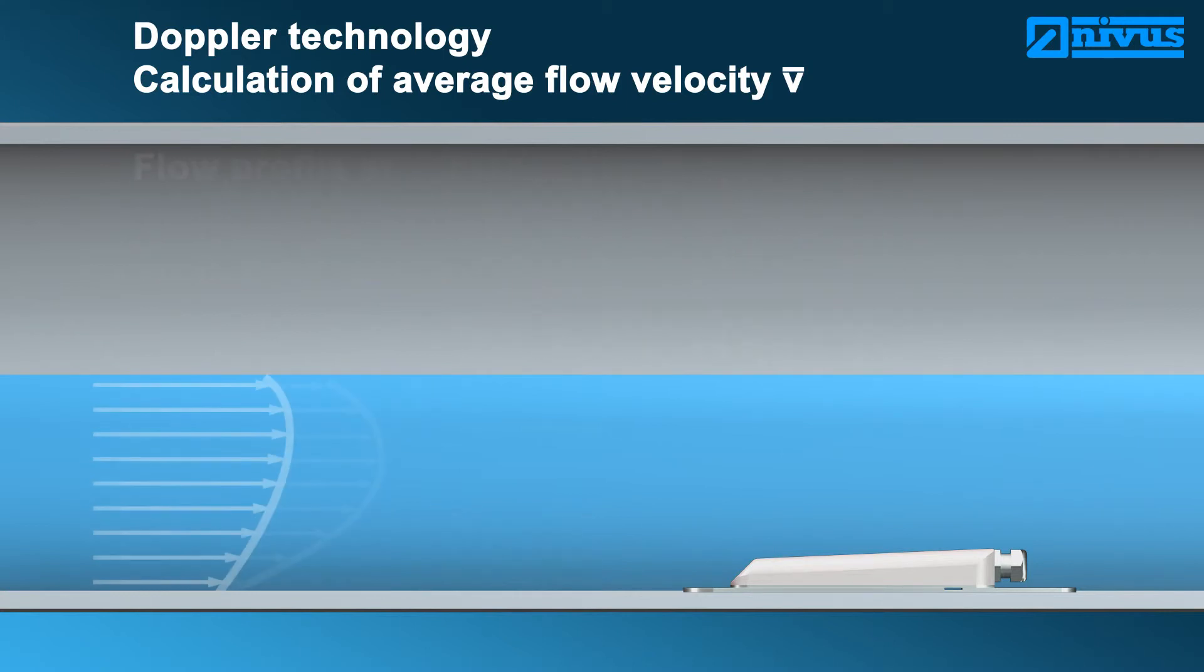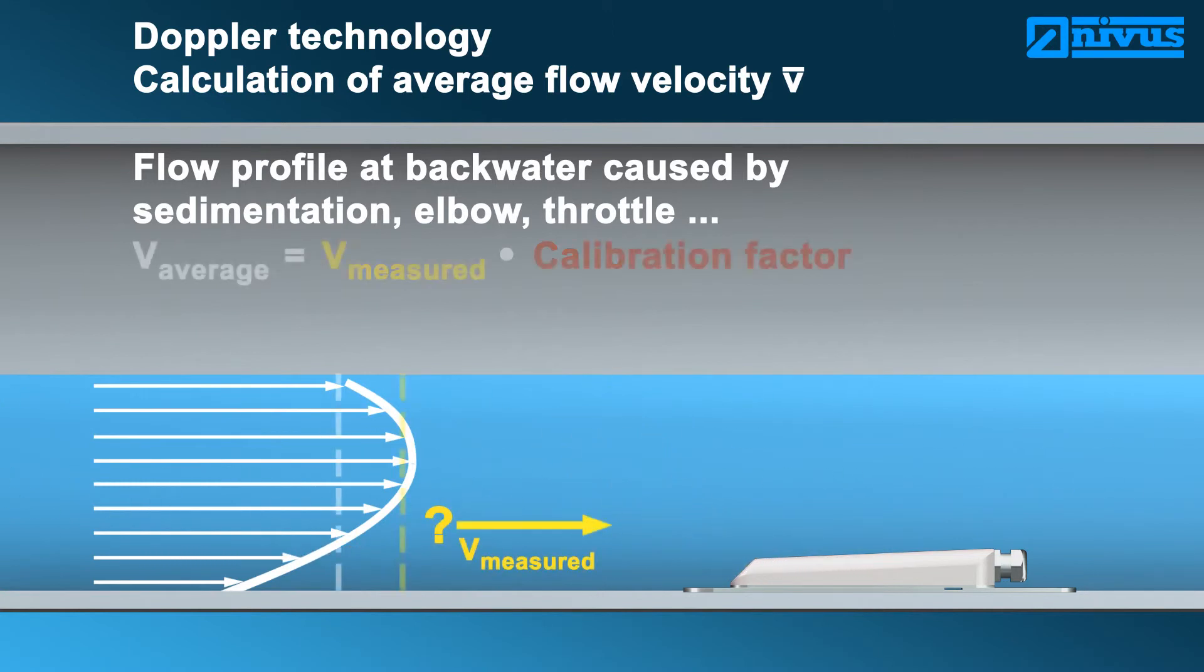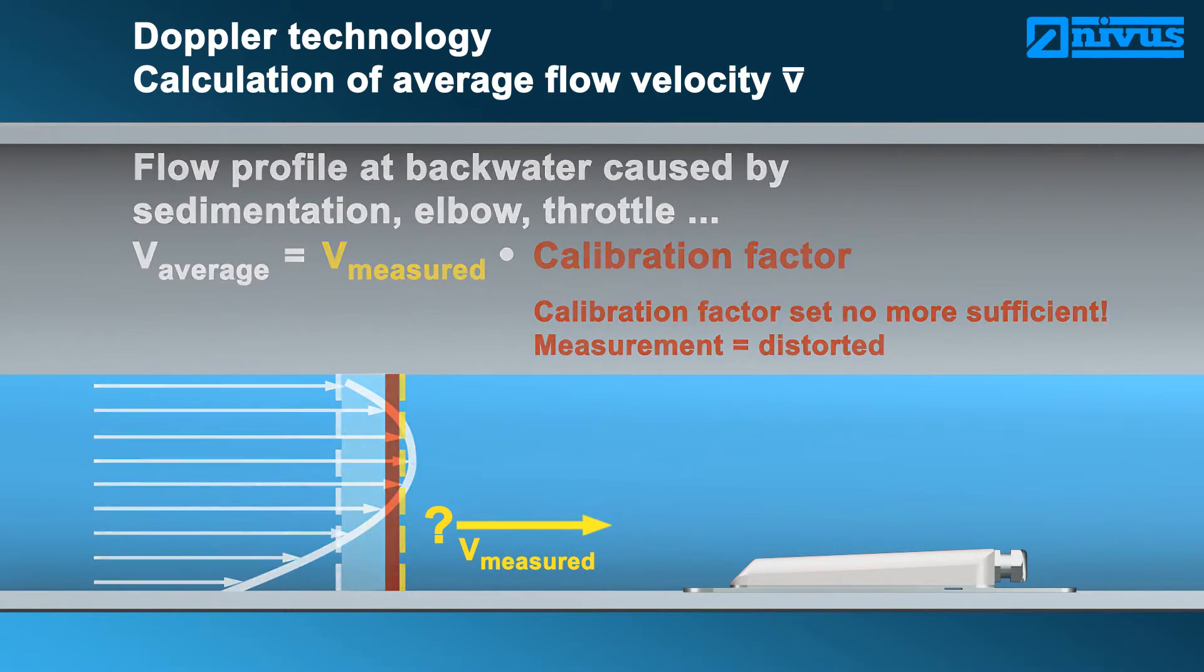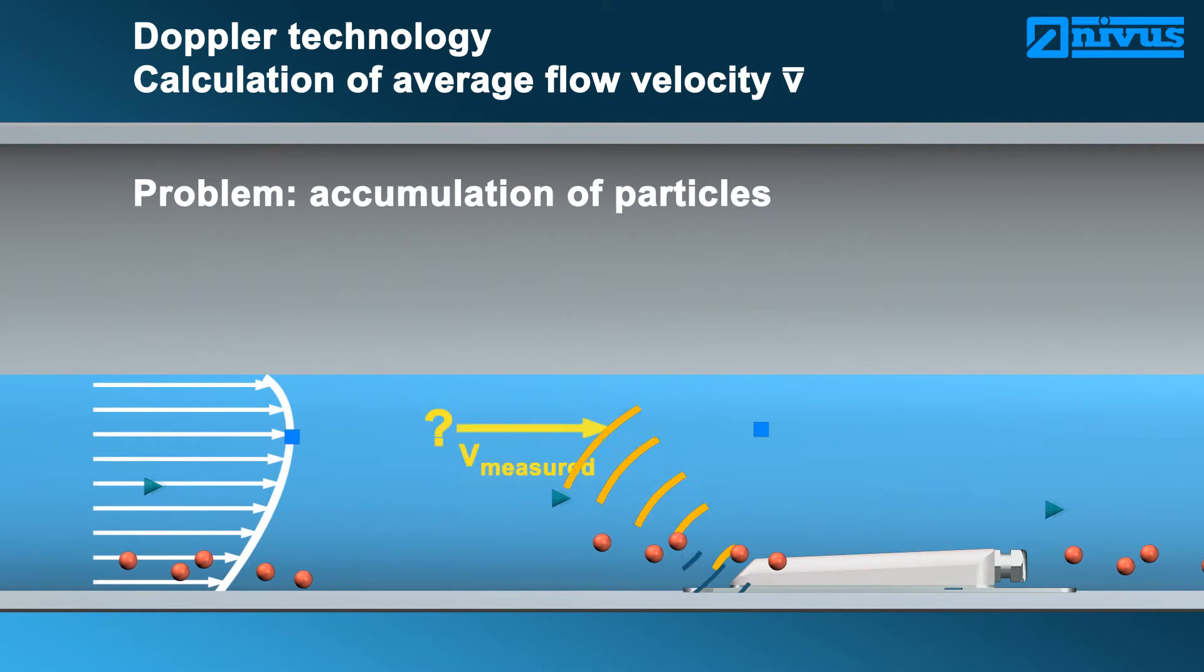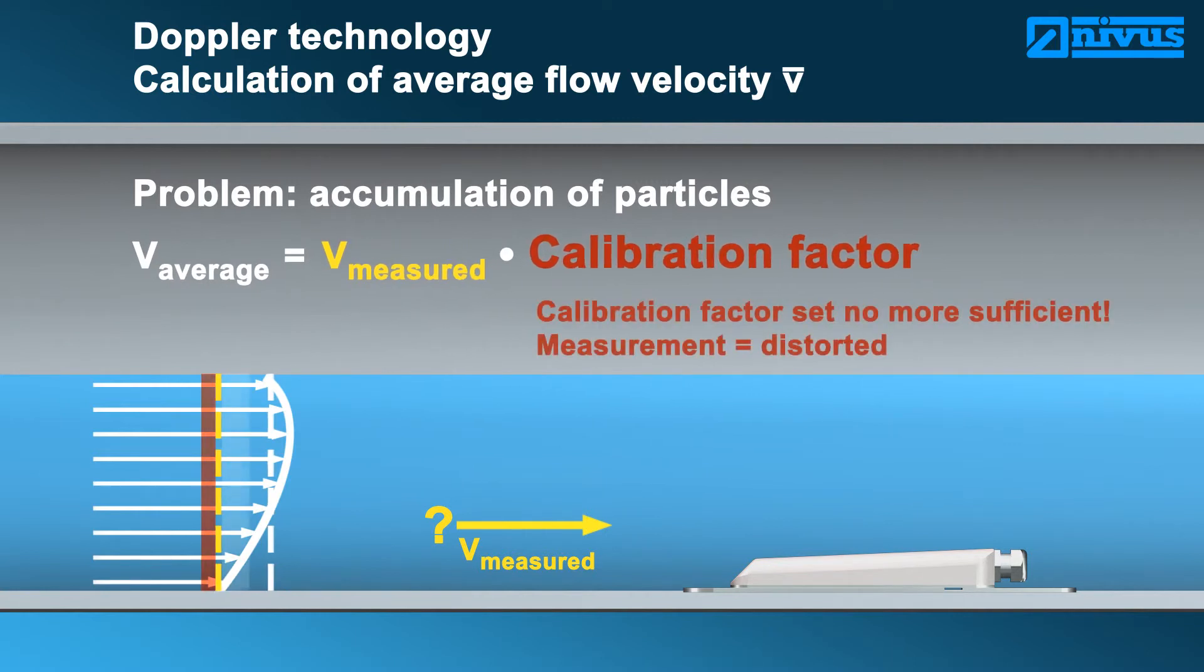The flow conditions will change even in case of backwater formation caused by sedimentation, elbows, or throttle equipment. The original calibration factor is no longer valid and the measurement results are faulty. Accumulation of particles generates a stronger measurement signal and is determined by the sensor as the measurement spot. A local variation therefore creates a distorted reading which varies from the calibration.